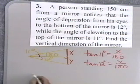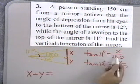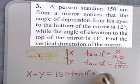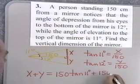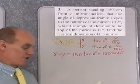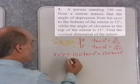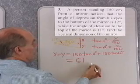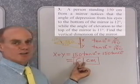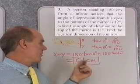What I'm looking for is the vertical dimension of the mirror, which is x plus y. x equals 150 times tangent 11, and y equals 150 times tangent 12. Working that out on a calculator — 150 tangent 11 plus 150 tangent 12 — comes out to 61 centimeters. I round to two significant digits because my angles are given to the nearest degree. So the vertical dimension of the mirror is 61 centimeters.